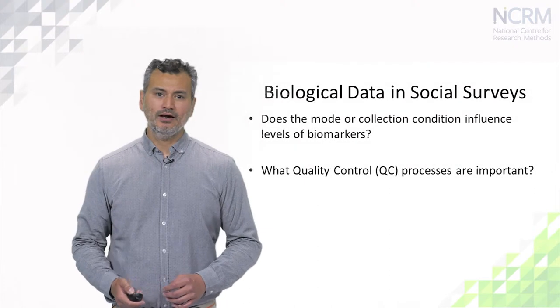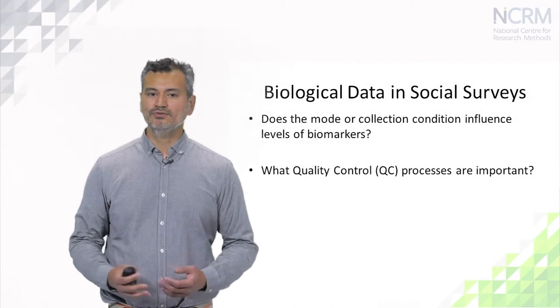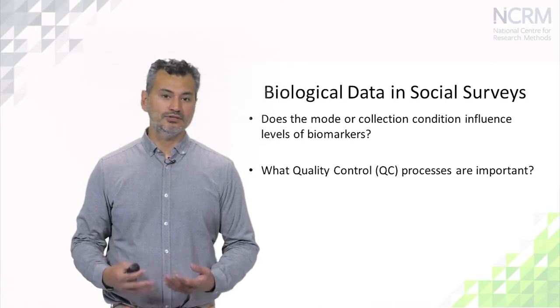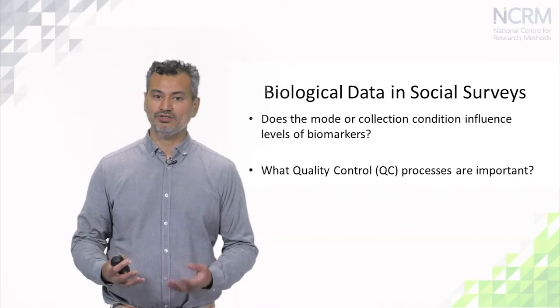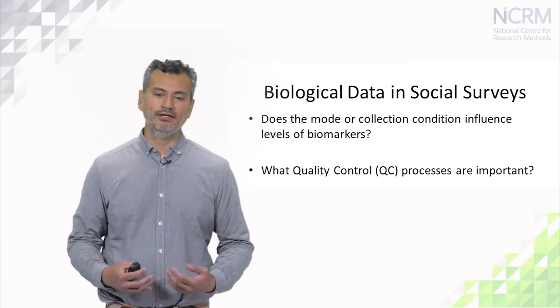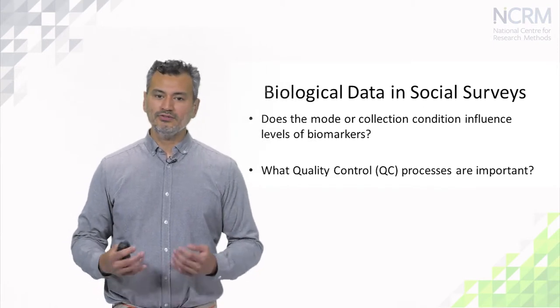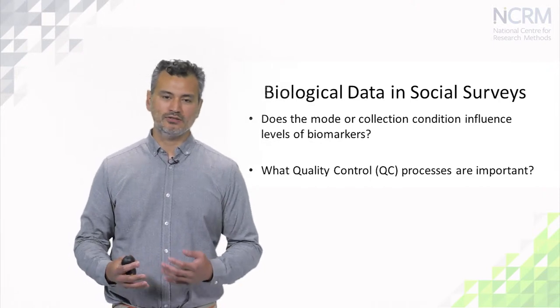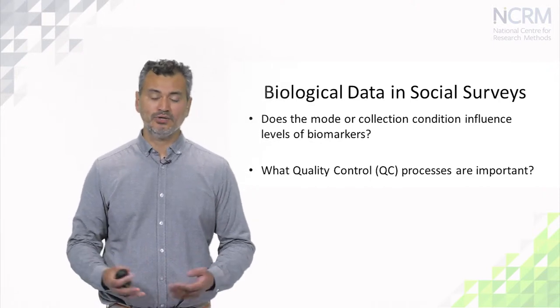The second part of this talk is about some of the data quality issues researchers should keep in mind when they're analyzing biosocial data. I'll be talking about two kinds of issues in particular: one is about the mode or collection condition, whether that's important and whether that should be taken into account when analyzing biomarkers. I'll also be talking about some of the quality control or QC processes that should be looked at by social science researchers when they're looking at biological data sets.